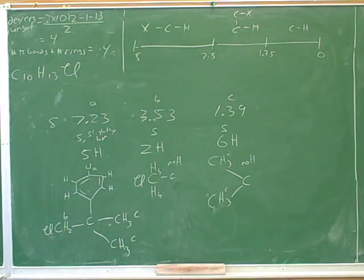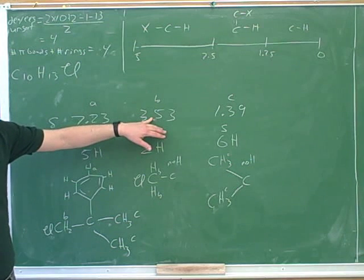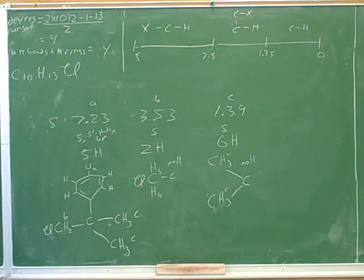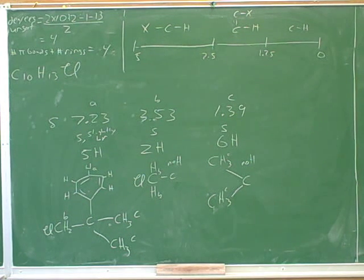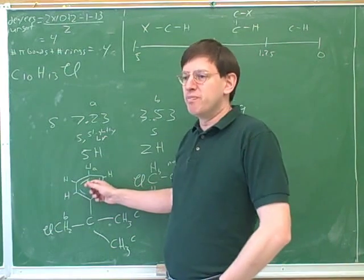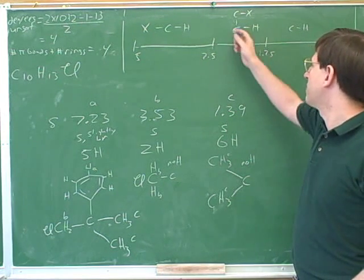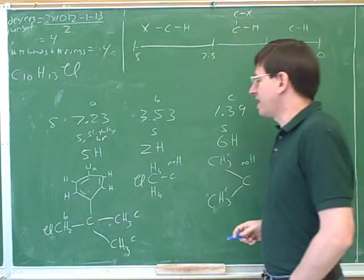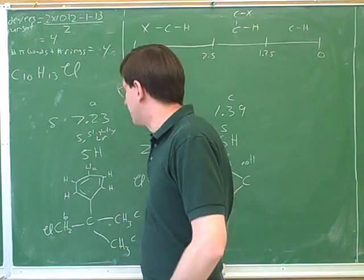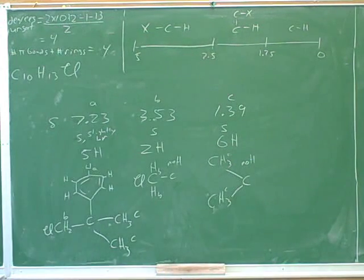Where would our table predict group B would absorb? 3.6 to 3.8 — that's right. I'm a little surprised this is actually slightly to the right of that, but it's pretty close. You have to take the table with a grain of salt — it doesn't always give the exact right answers. And where would the table predict group C would absorb? It's shifted to the left because of the chlorine and also because of the benzene — both the benzene and the chlorine are pulling to the left. So it's not too surprising that we're in the 1.39 region. It represents being adjacent to carbons that are adjacent to the electronegative chlorine or the benzene. Everything seems to match up pretty well.